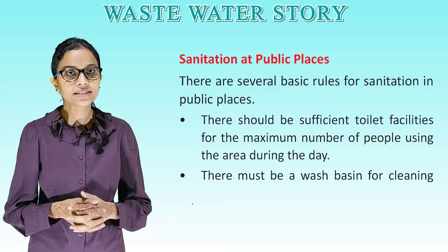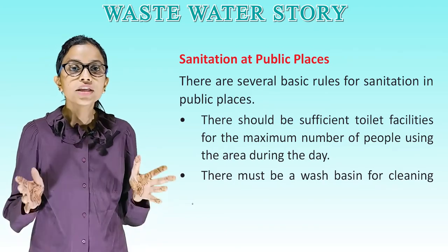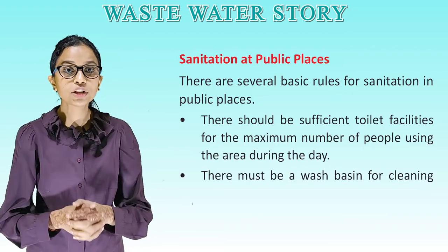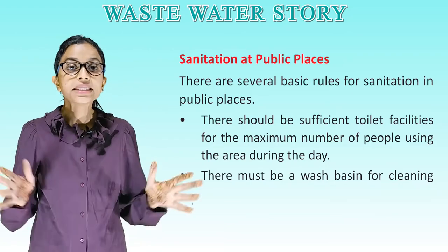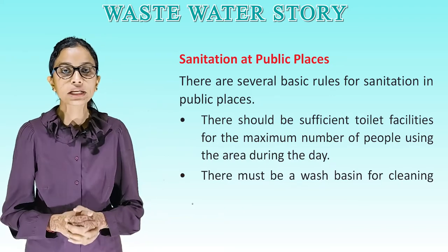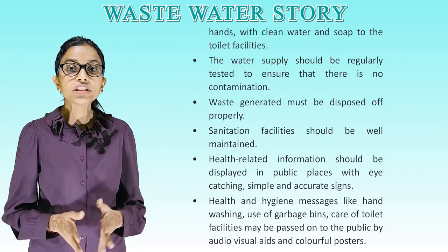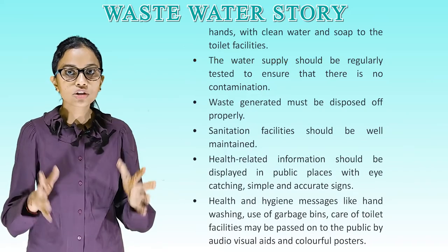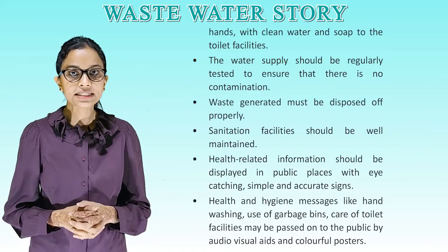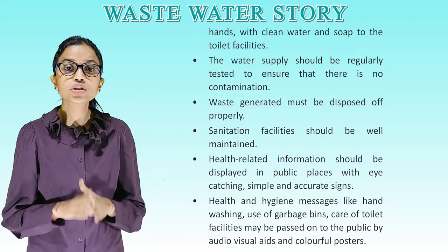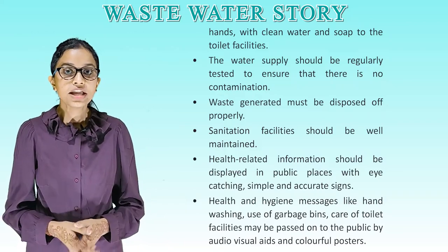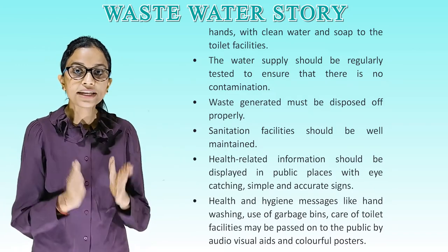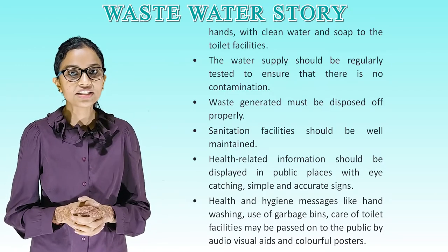Sanitation at public places: there are several basic rules for sanitation in public places. There should be sufficient toilet facilities for the maximum number of people using the area during the day. There must be a washbasin with clean water and soap near the toilet facilities. The water supply should be regularly tested to ensure no contamination, waste must be disposed of properly, and sanitation facilities should be well maintained.